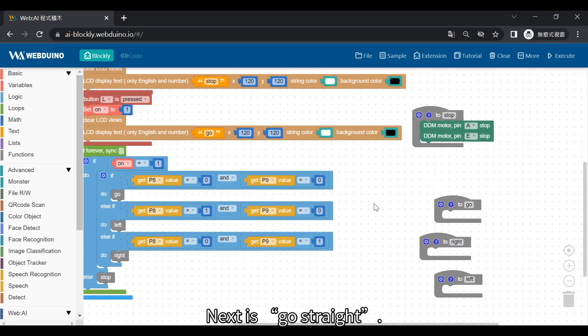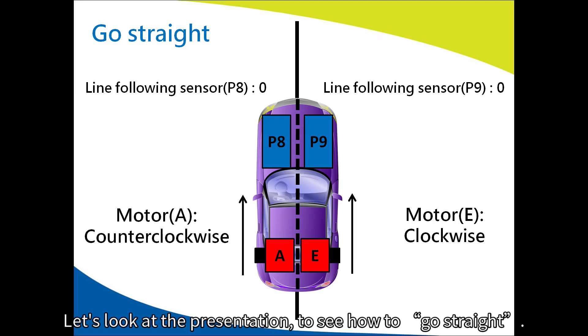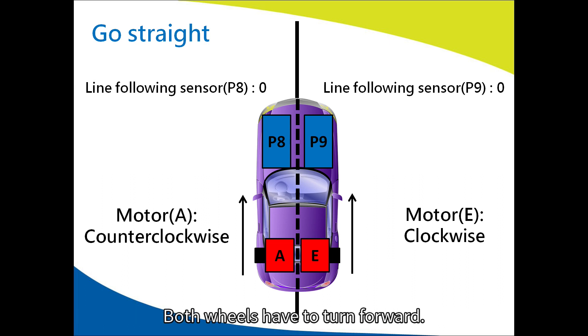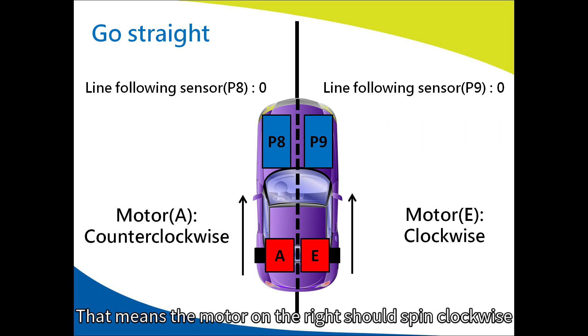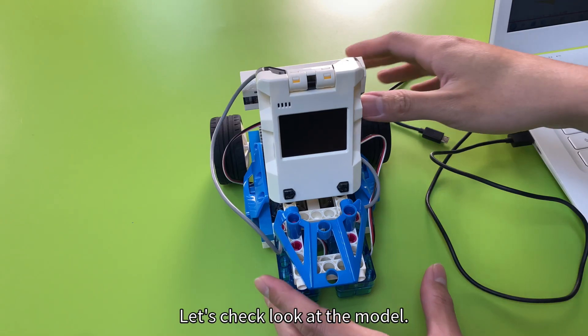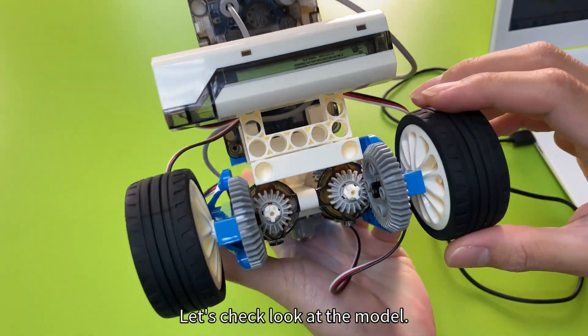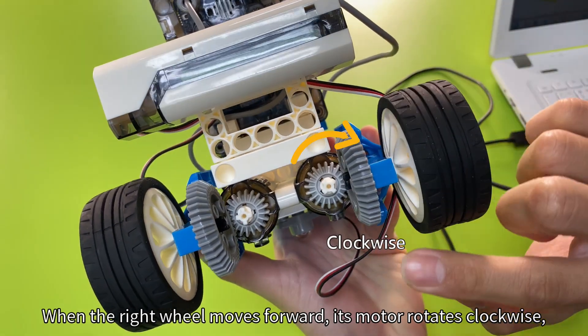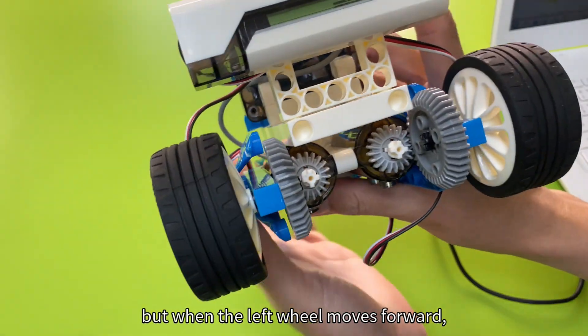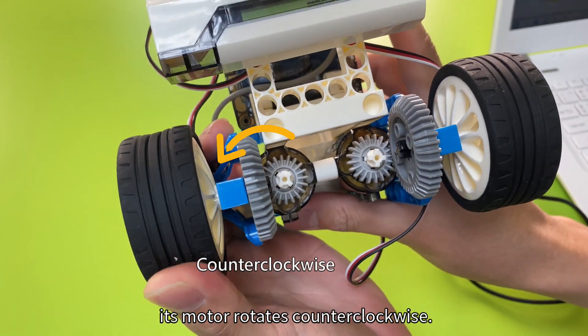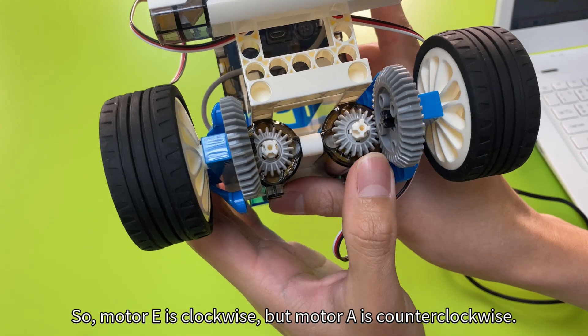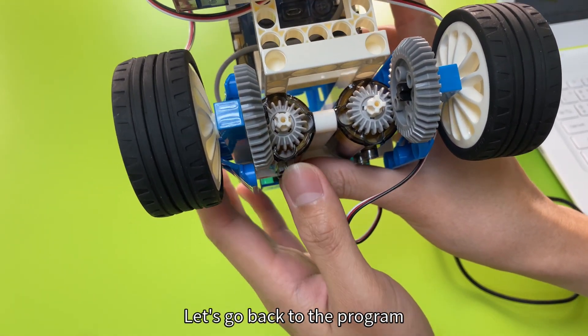Next is go straight. Let's look at another presentation to see how to go straight. Both wheels have to turn forward. That means the motor on the right should spin clockwise, and the motor on the left should spin counter-clockwise. You might be wondering why. Let's look at the model. When the right wheel moves forward, its motor rotates clockwise. But when the left wheel moves forward, its motor rotates counter-clockwise. So, motor E is clockwise, but motor A is counter-clockwise.